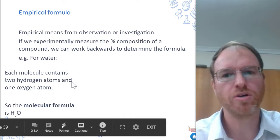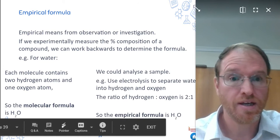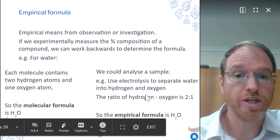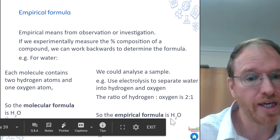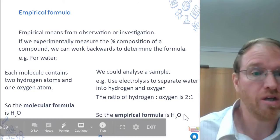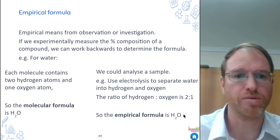But what if we did it experimentally? Well, we could analyze a sample, use electrolysis like we did in class, and we would find the ratio of hydrogen to oxygen is two to one. And so the formula we get is H2O. We call that the empirical formula because we got it by analyzing, by investigation, empiricism.